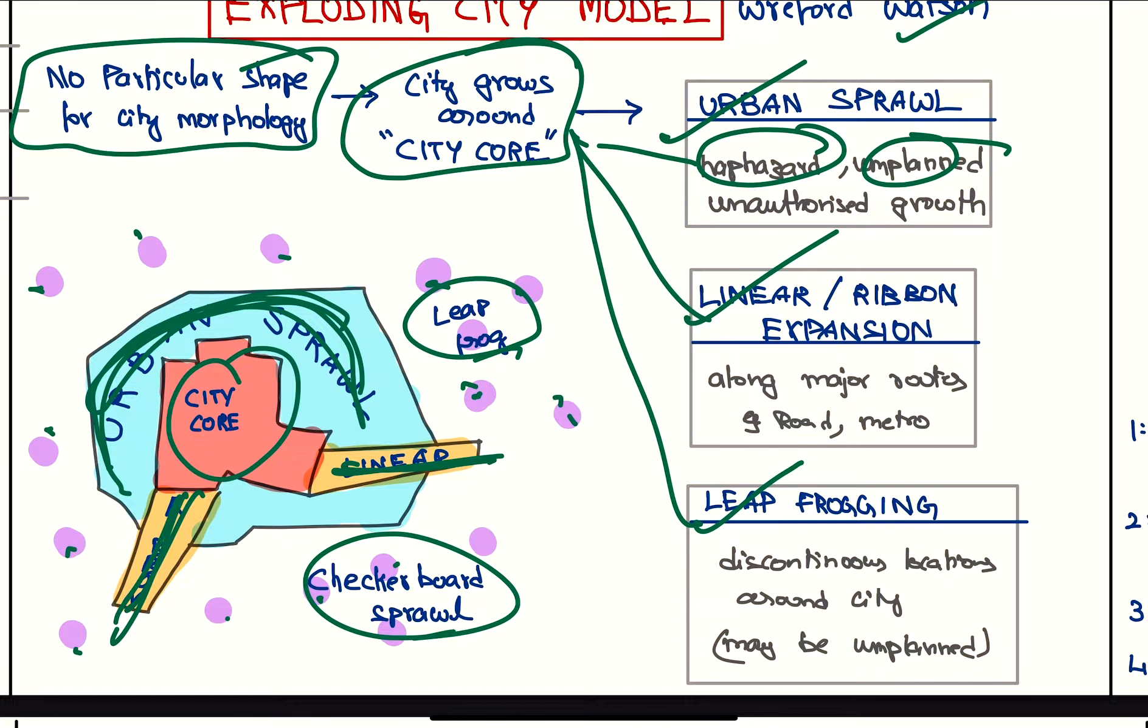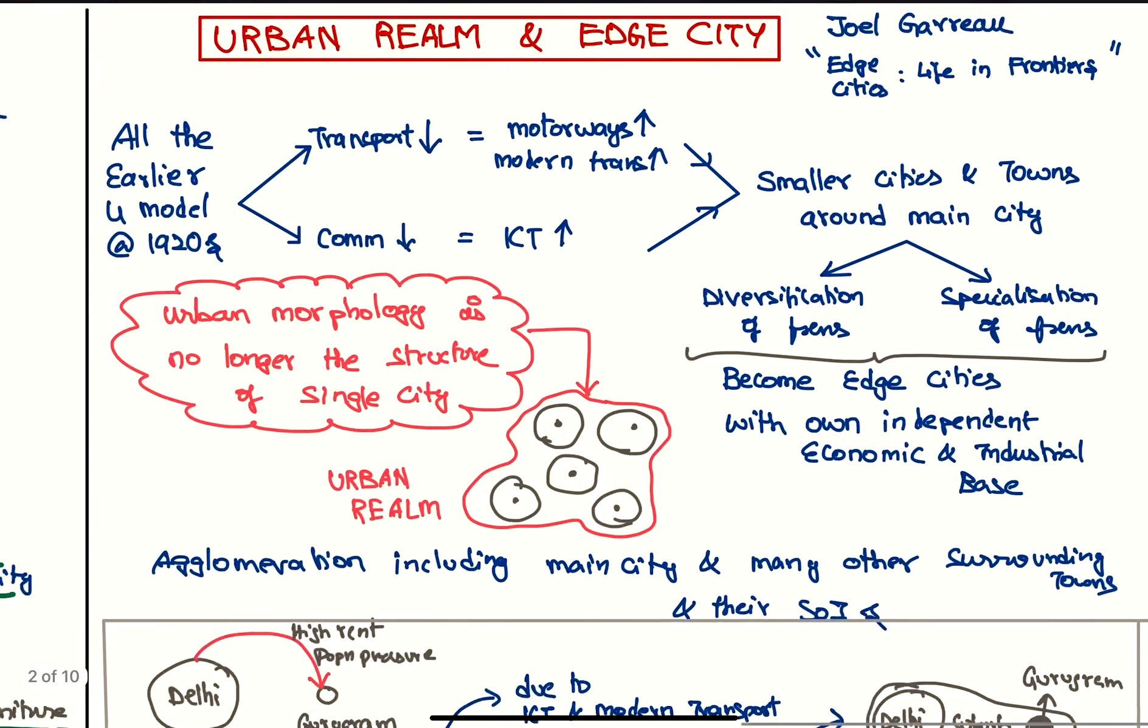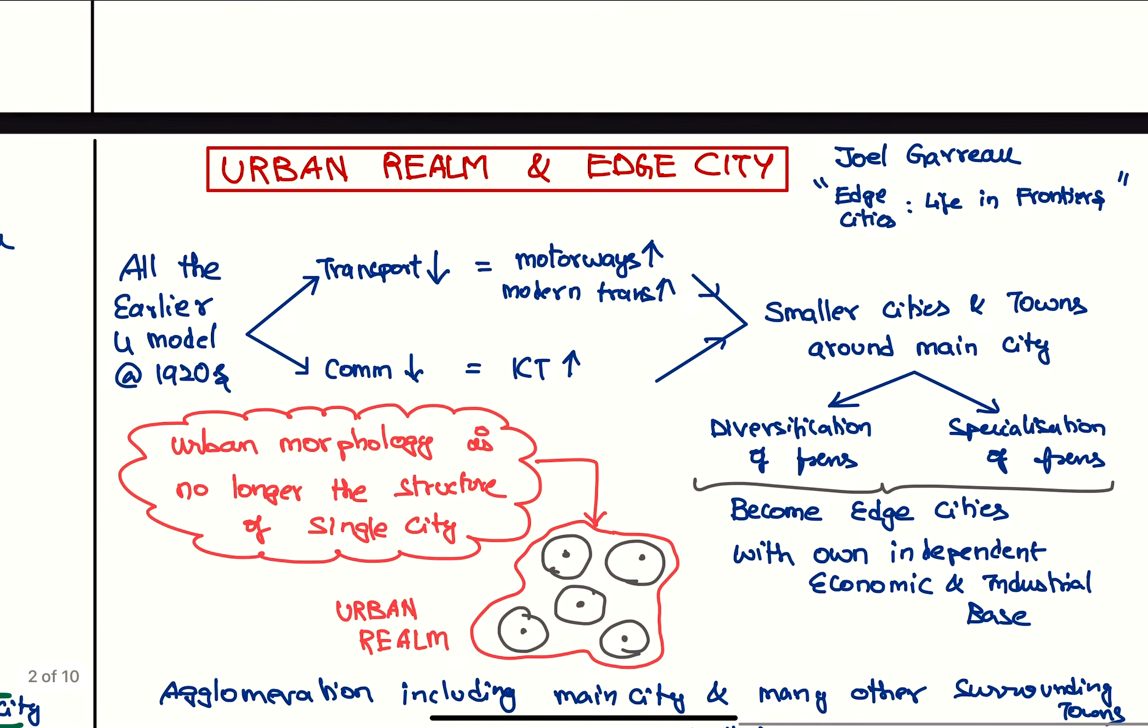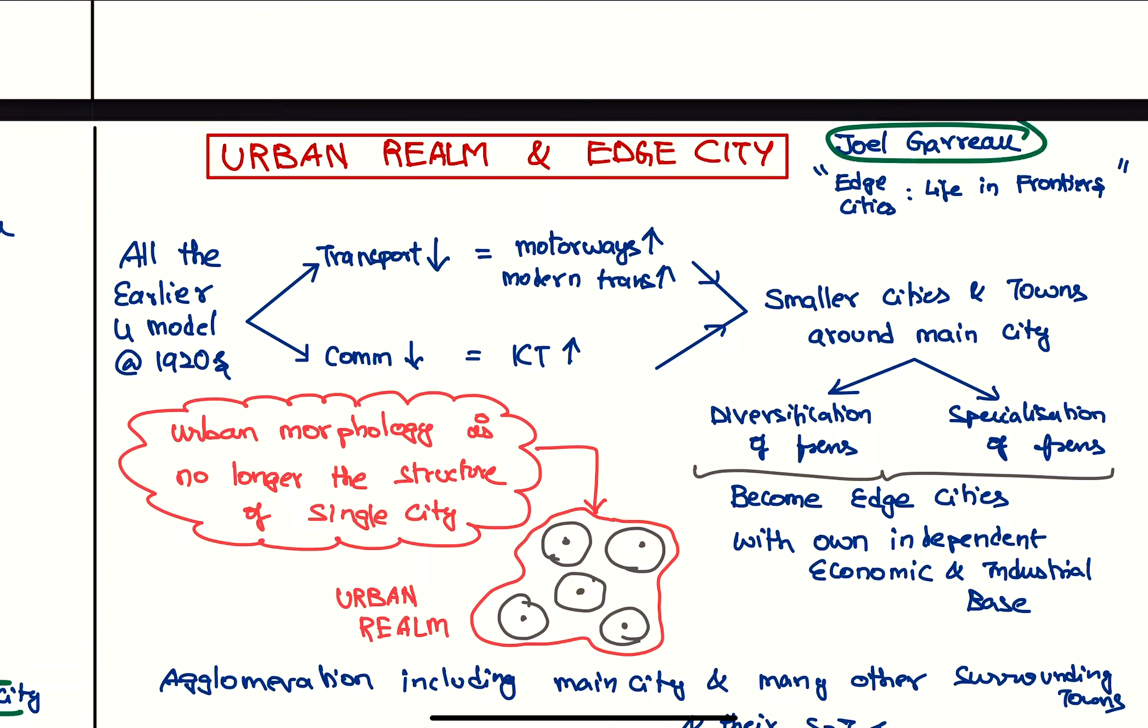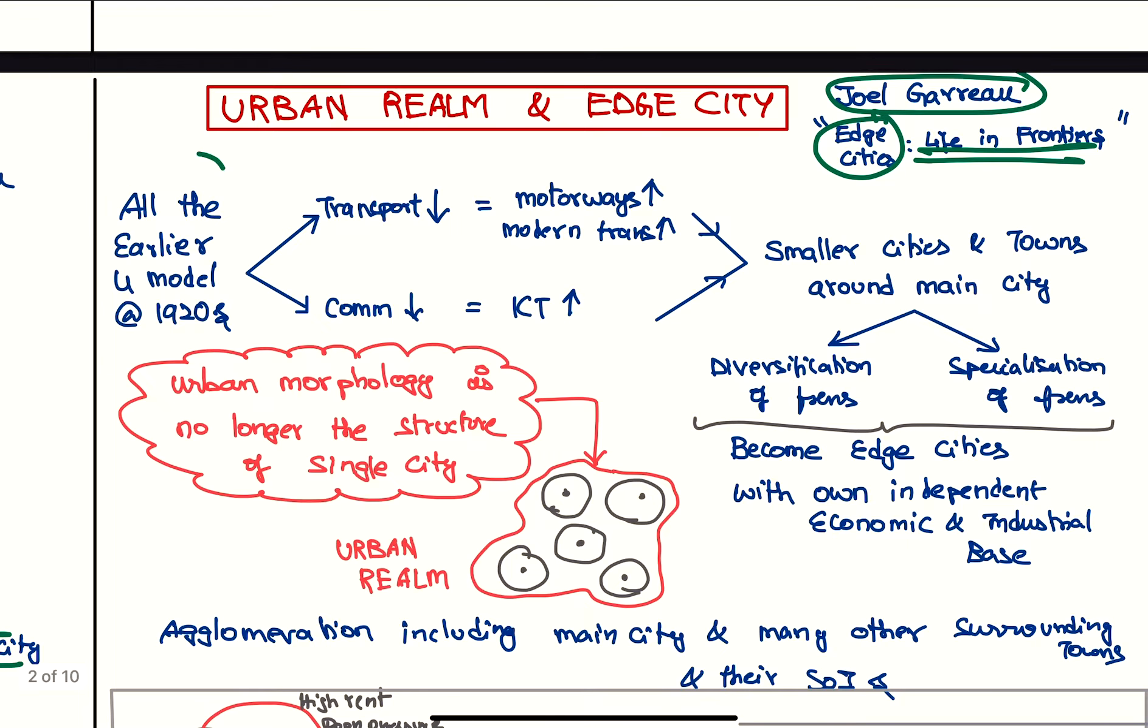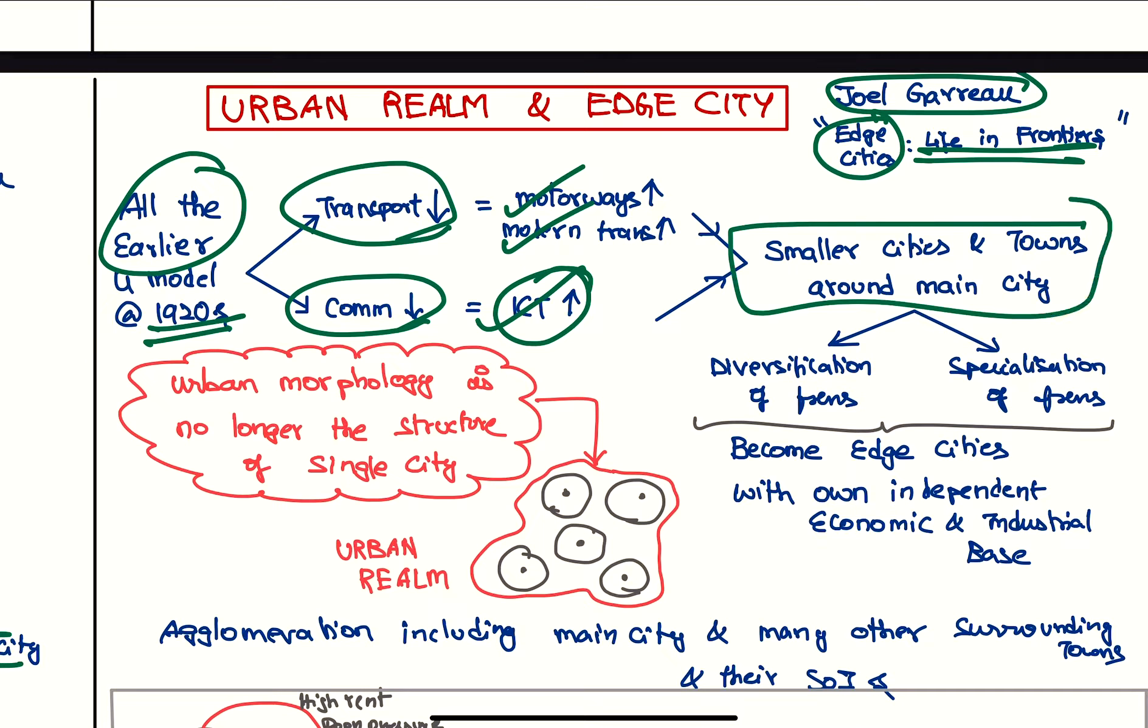Next we have the urban realm and edge city model, popularized by Joel Garreau in his book 'Edge Cities: Life on the New Frontier'. All the four models we have seen were mostly given in the 1920s. During those times, transport was very poor and communication was very poor. But in modern times, due to motorway expansion and modern transport and ICT improvement, the smaller cities and towns around the main city are able to diversify their functions and specialize their functions. Therefore, these cities become edge cities.